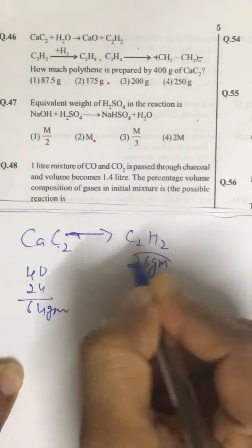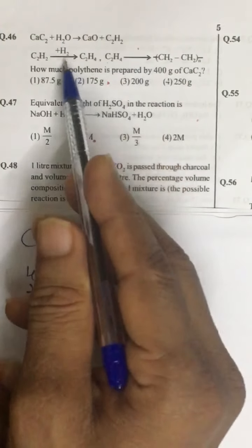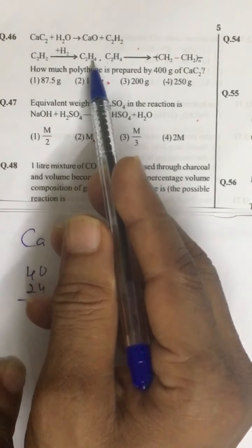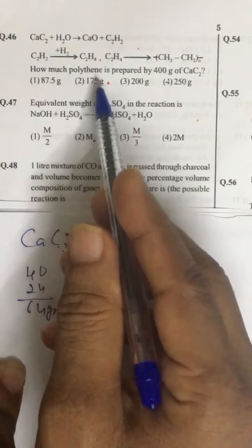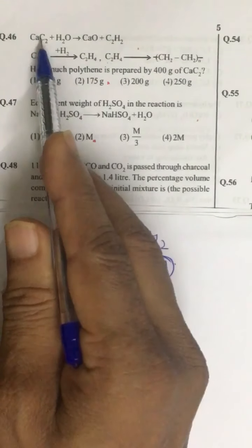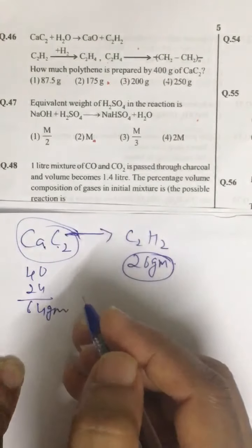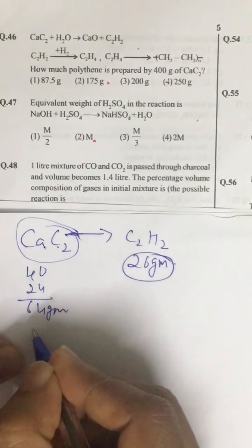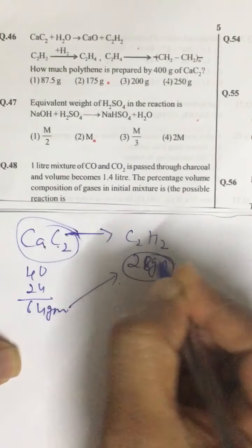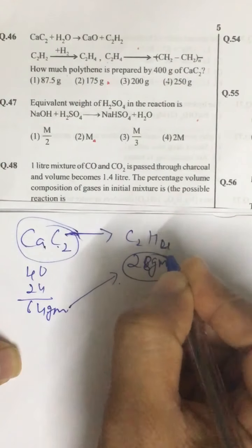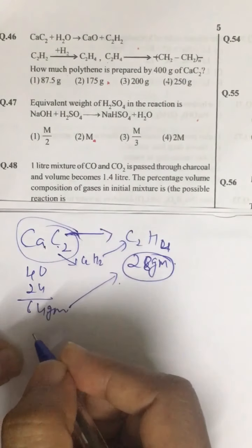This is 26 grams. And this 26 grams is again hydrogenated to ethene. Its mass is 28. So regarding the source of hydrogen, we are not bothered because we have to calculate the amount of polythene from this much of calcium carbide. So the question is from 64 grams, we are getting 26 grams of acetylene or you can say 28 grams of ethene. Ethene because it was converted to acetylene and then converted to ethene.